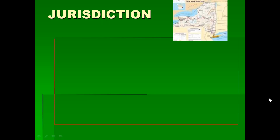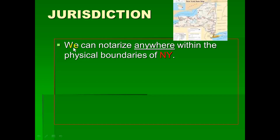Here's a word we need to know the definition of for the exam: jurisdiction. Our jurisdiction means we can notarize anywhere within the physical boundaries of New York. Here's a map of New York — all the way down to the end of Long Island, up to the Canadian border. No matter what county your stamp says for the address, you'll be assigned to that county locally, but you can go notarize anywhere within the boundaries of New York State. That's your jurisdiction.